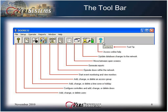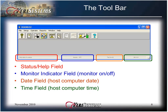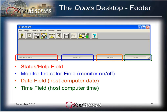The toolbar provides access to the most often used features of the program. The DOORS desktop footer contains information at the bottom of your DOORS32 window. There is the status help field, the monitor indicator field — this indicates whether the monitor is turned on or off — the date field, which indicates the host computer's date, and the time field, indicating the host computer time.